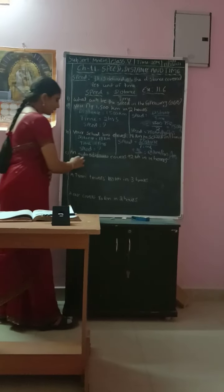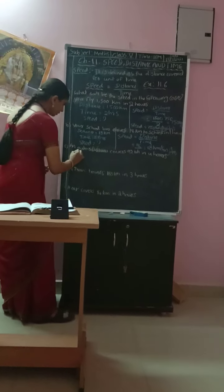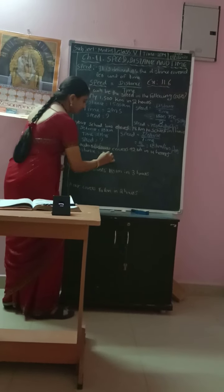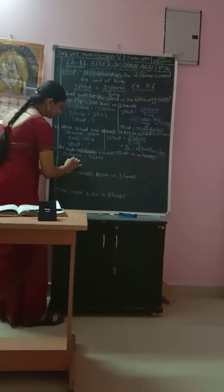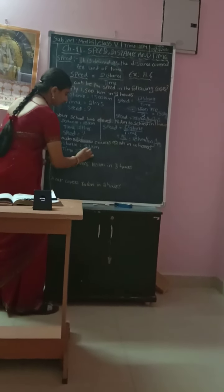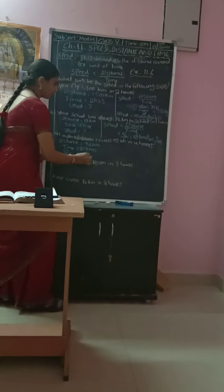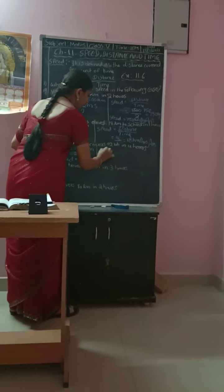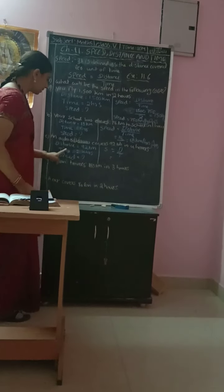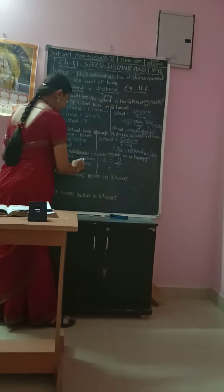Next is the third problem. A rickshaw covers 92 km in 4 hours. What is the distance? 92 km. And what is the time? 4 hours. Speed equals S equals D divided by T, where D means distance, T means time, and S means speed.